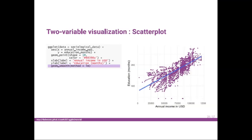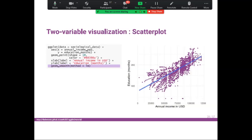I want to add a smoothing line, so I call geom_smooth() with method = 'lm' for a linear regression line between annual income and education months. I can change the appearance of the regression line by setting arguments like linetype = 'dashed', color = 'darkred', and fill = 'blue'. This gives a dashed dark-red regression line.